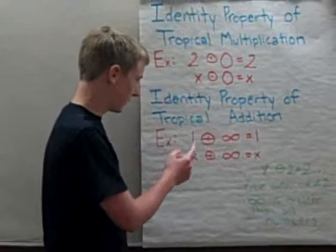So we have here one tropically added to infinity is one, and then any number x tropically added to infinity is x.